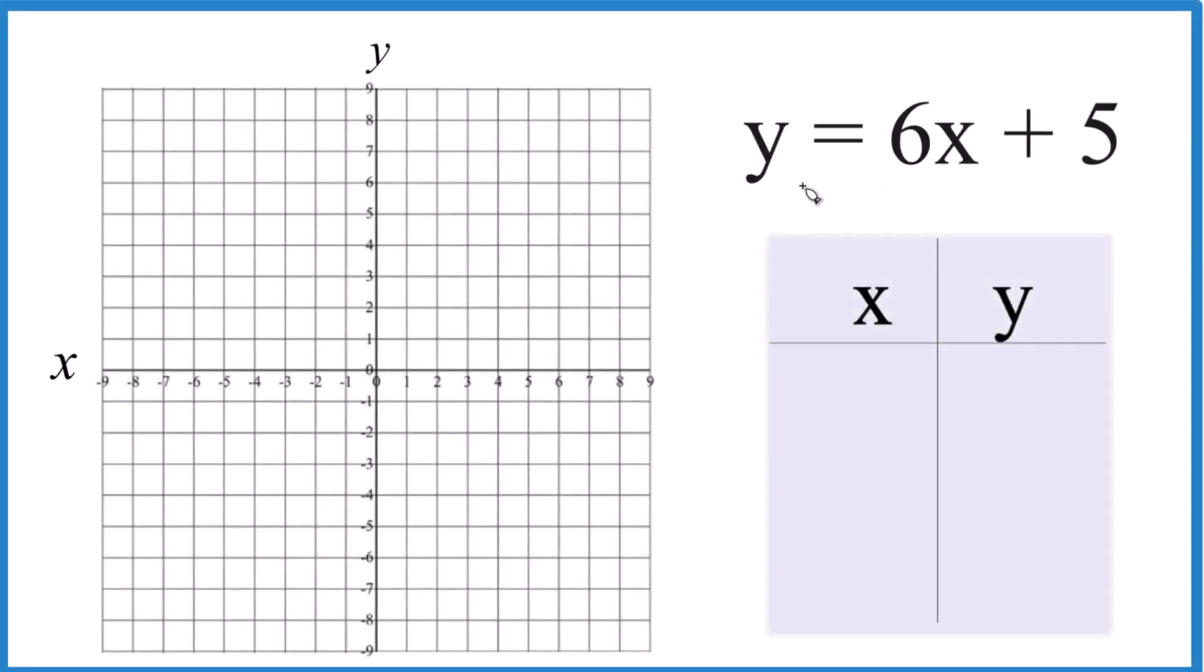Let's graph the linear equation y equals 6x plus 5. We're going to use a table of values to do it. You could use slope-intercept form, we'll give you the same answer. If you need help with that, there's a link at the end of this video.